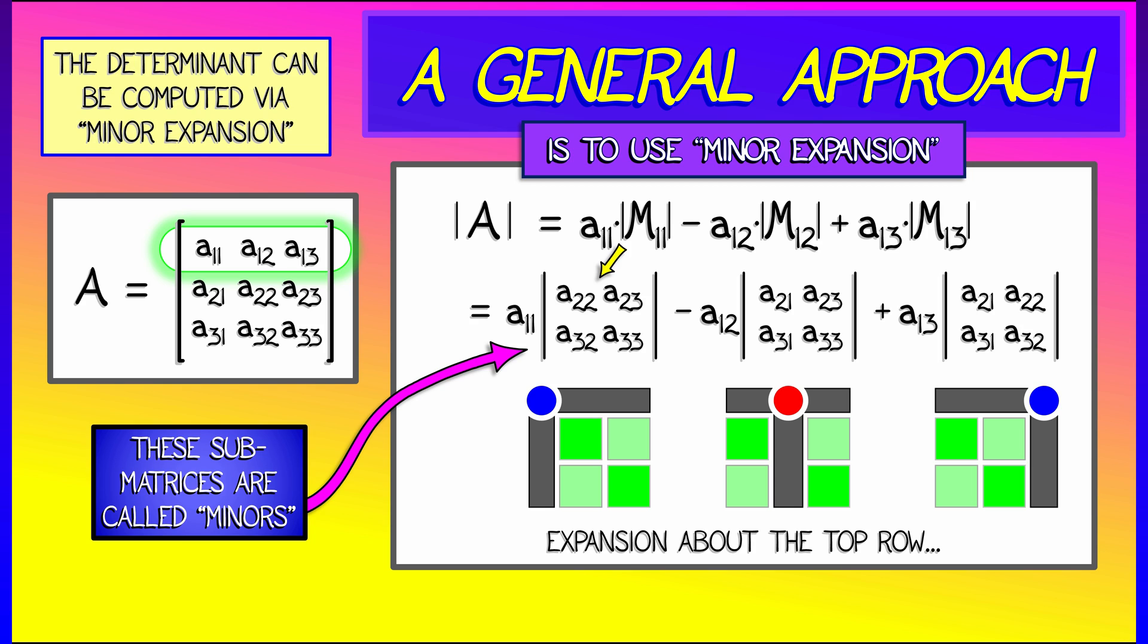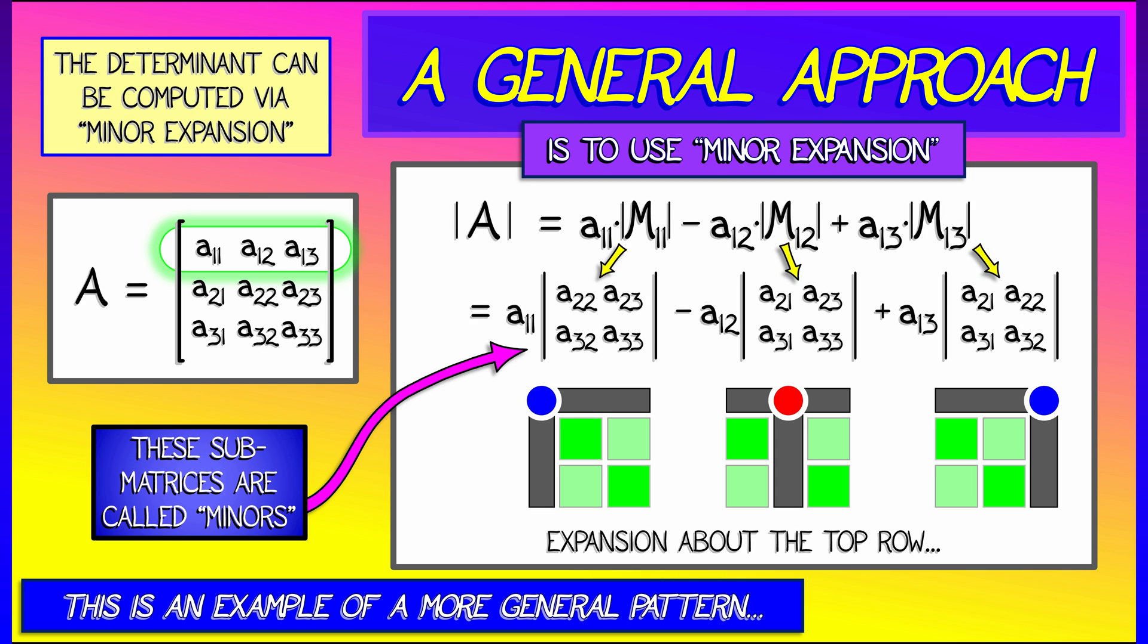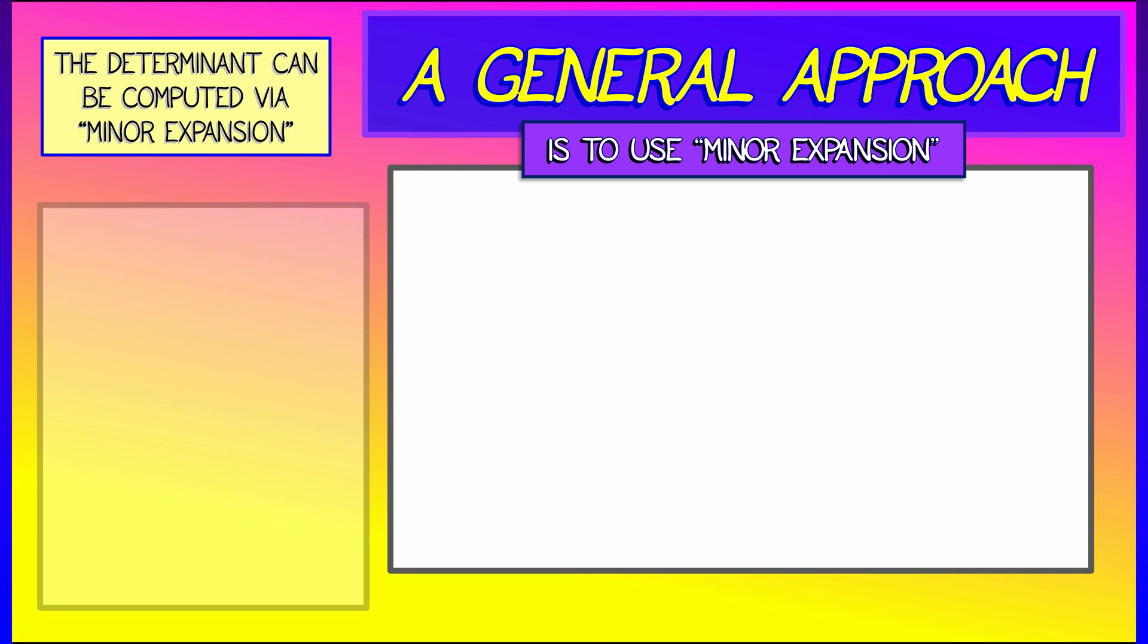This is an example of minor expansion about the first row. But we're just getting started because you can do a lot more than that.